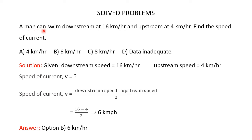A man can swim downstream at 16 kmph and upstream at 4 kmph. We are asked to find the speed of the current. His downstream speed is 16 kmph and upstream speed is 4 kmph. The speed of the current can be found using the formula: speed of the current equals downstream speed minus upstream speed divided by 2.